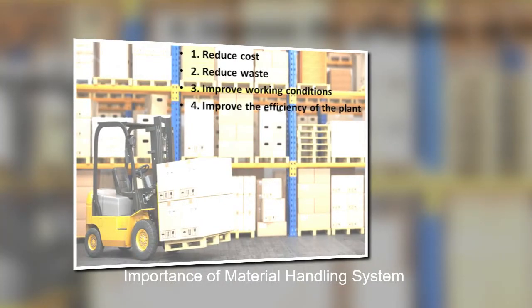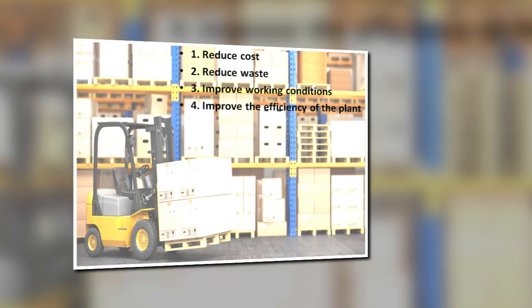A good material handling system may have the following benefits: reduce cost by utilizing space to better advantage, increasing productivity, and making a fewer number of effective movements. Reduce waste by eliminating damage to materials during the handling process and maintaining proper control over the in and out of stock. Improve work conditions by providing safer working conditions and reducing worker fatigue. And finally, improve the efficiency of the plant by providing a better organization of storage facilities.